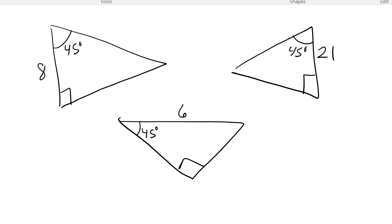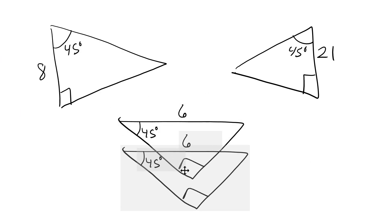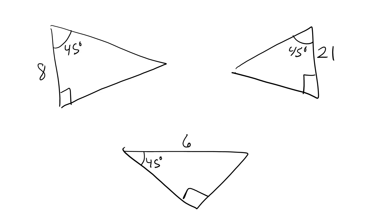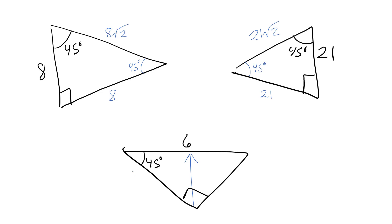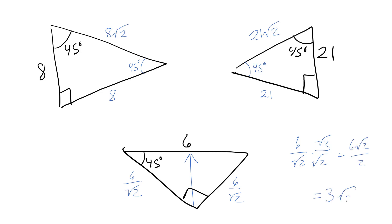Here's some practice for 45-45-90. For the first: both legs are equal and the hypotenuse is that length times √2. For the second: 21 is a leg, so the other leg is also 21 and the hypotenuse is 21√2. For the third: 6 is opposite the right angle, so each leg is 6/√2, which rationalizes to 6√2/2 = 3√2. Either form is technically correct, though some teachers insist on no square roots in the denominator.